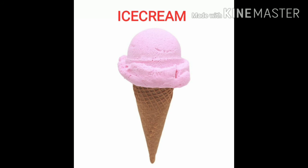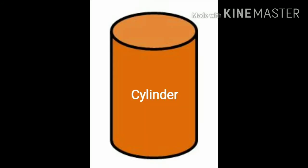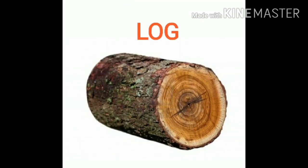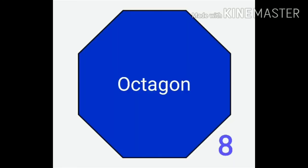Cylinder. Cylinder shape object is log. Octagon. Octagon shape object is tray.